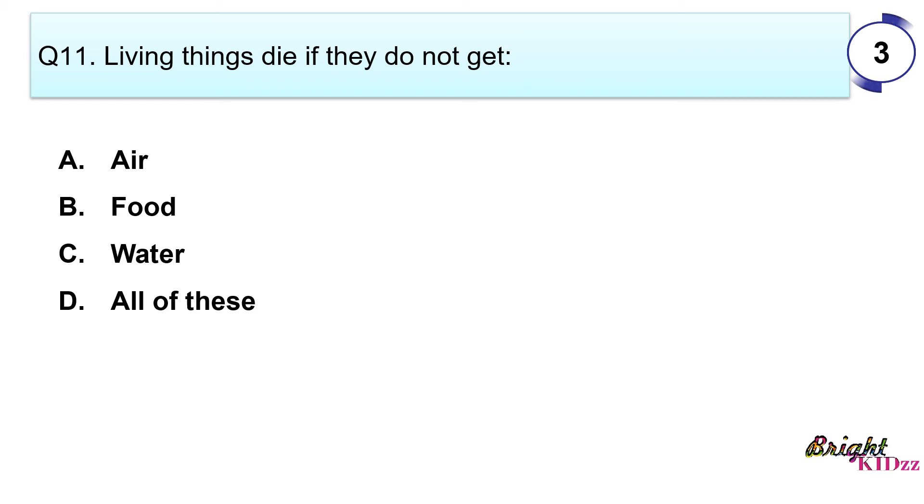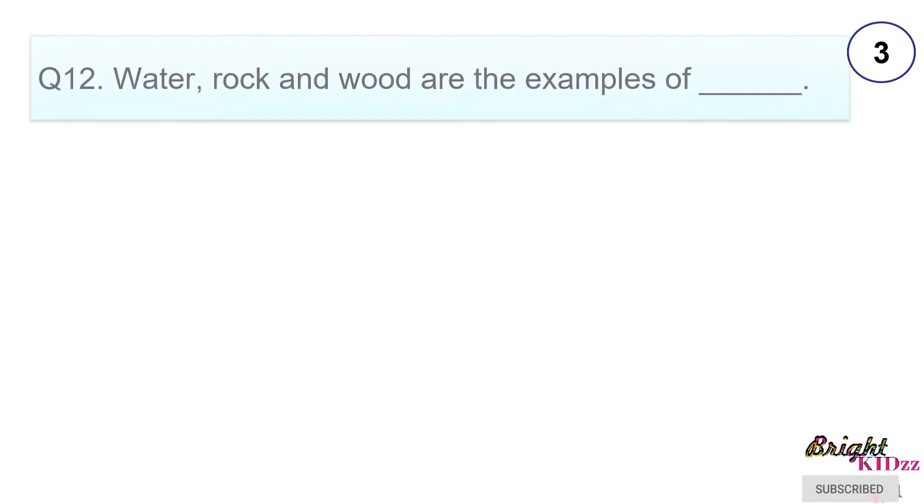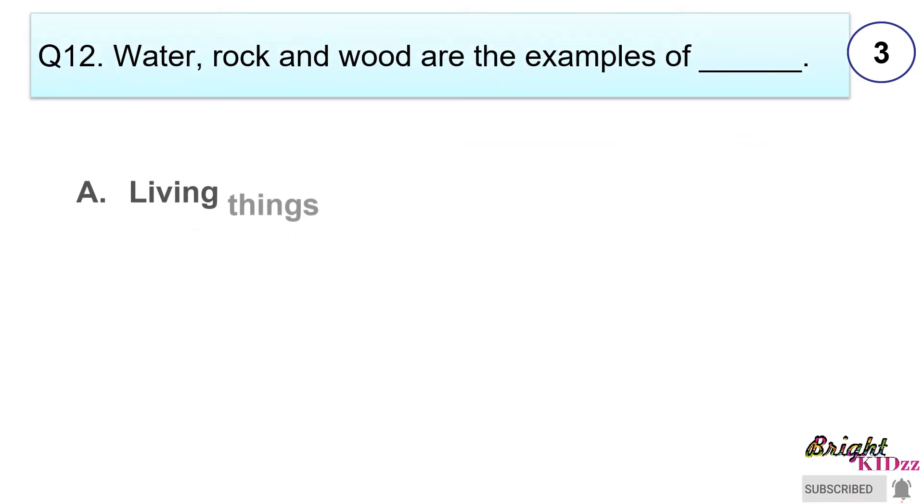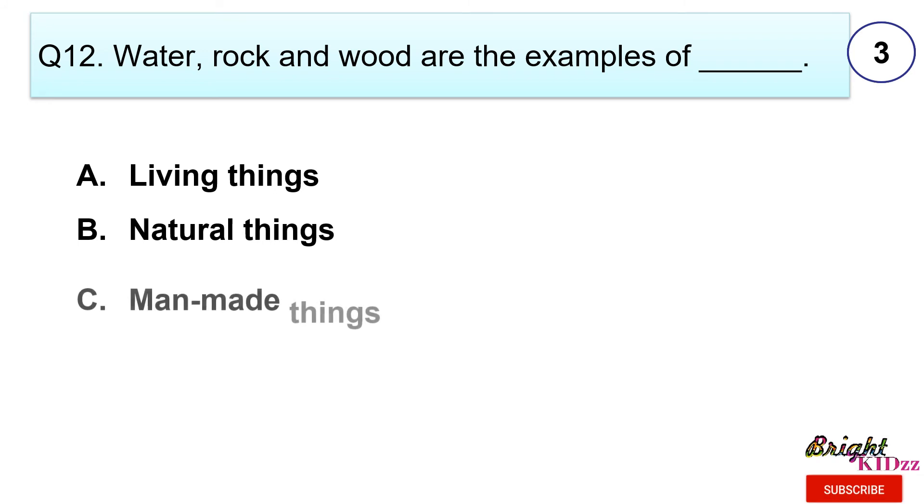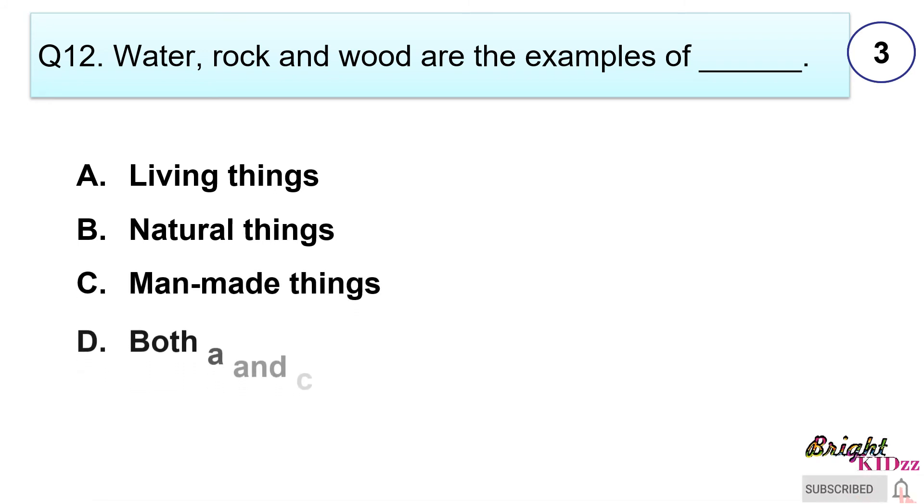Answer D. All of these. Water, rock and wood are examples of: A. Living things, B. Natural things, C. Man-made things, D. Both A and C.